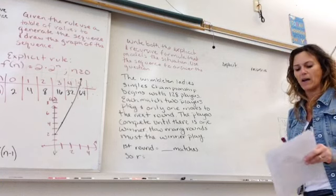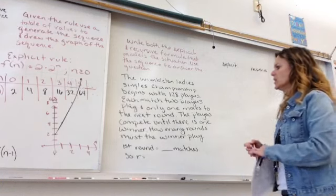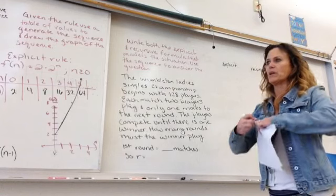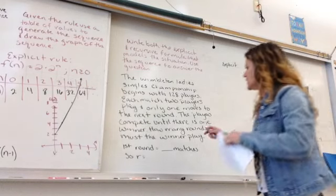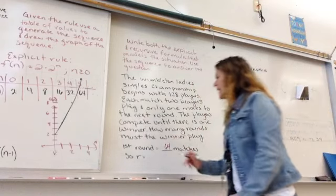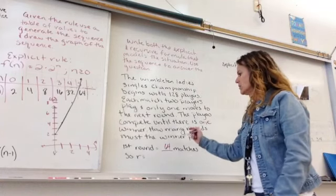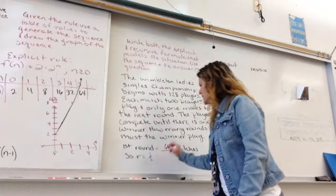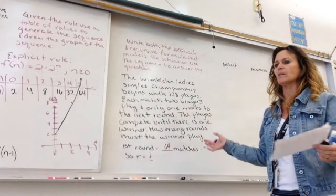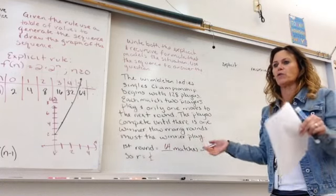The players compete until there's one winner. So they want to know how many rounds does the winner play. Well, if two people play and we have 128 people, that means we have 64 matches. So each time, it's going to go down by half because 64 matches means there's going to be 64 winners. 64 people play, that's 32 matches. It's going to keep going down by half.